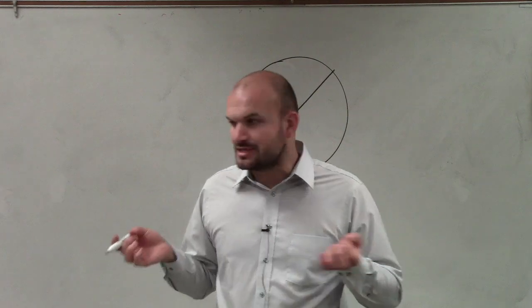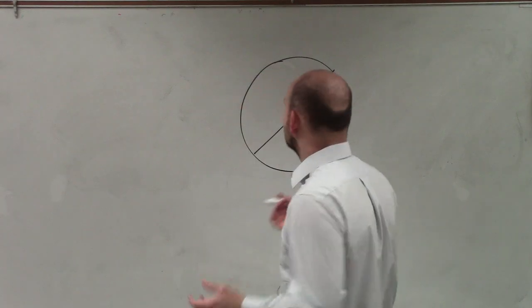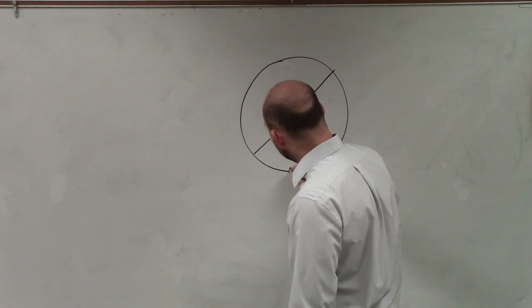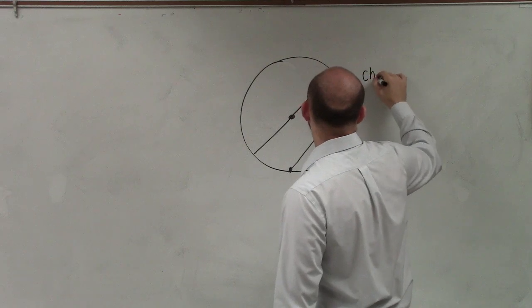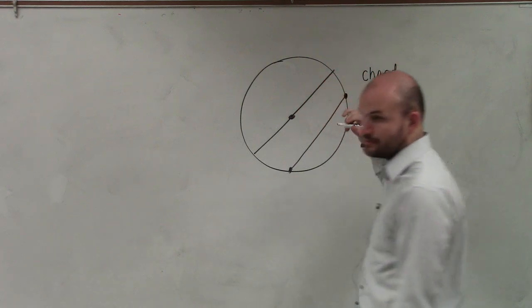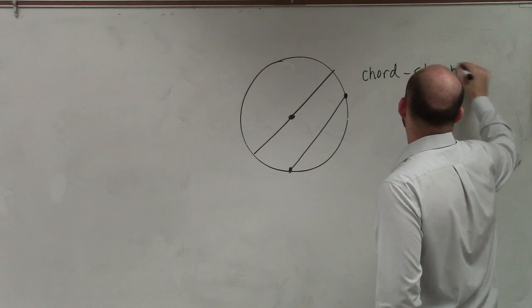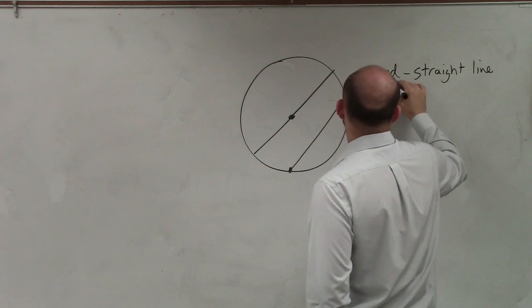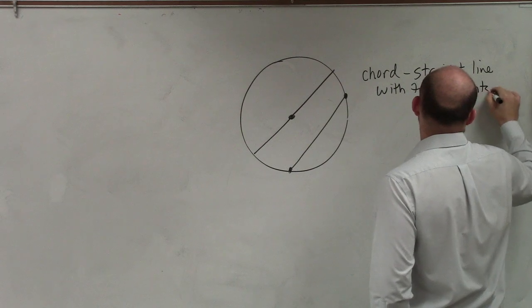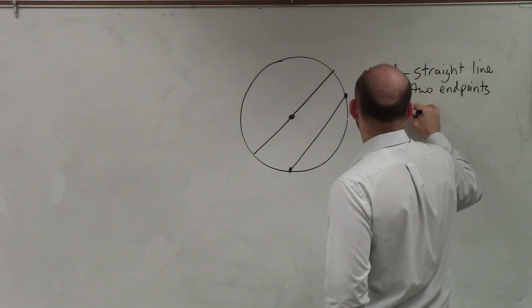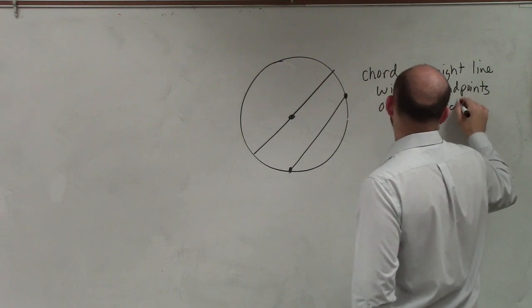Now, this is a special type of what we call a chord. The basic definition of a chord is any line with two endpoints on the circle. So a chord is a straight line with two endpoints on a circle.